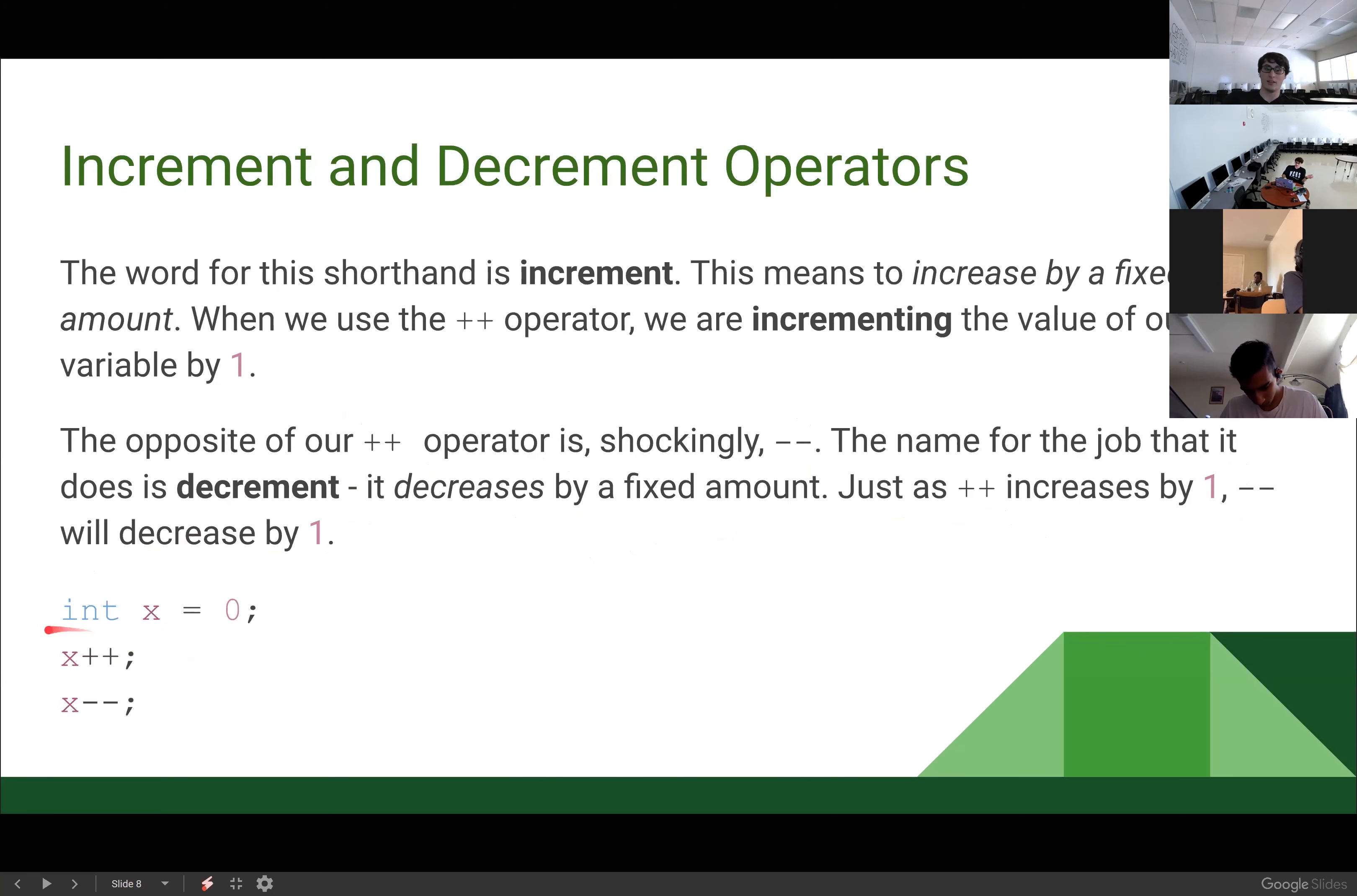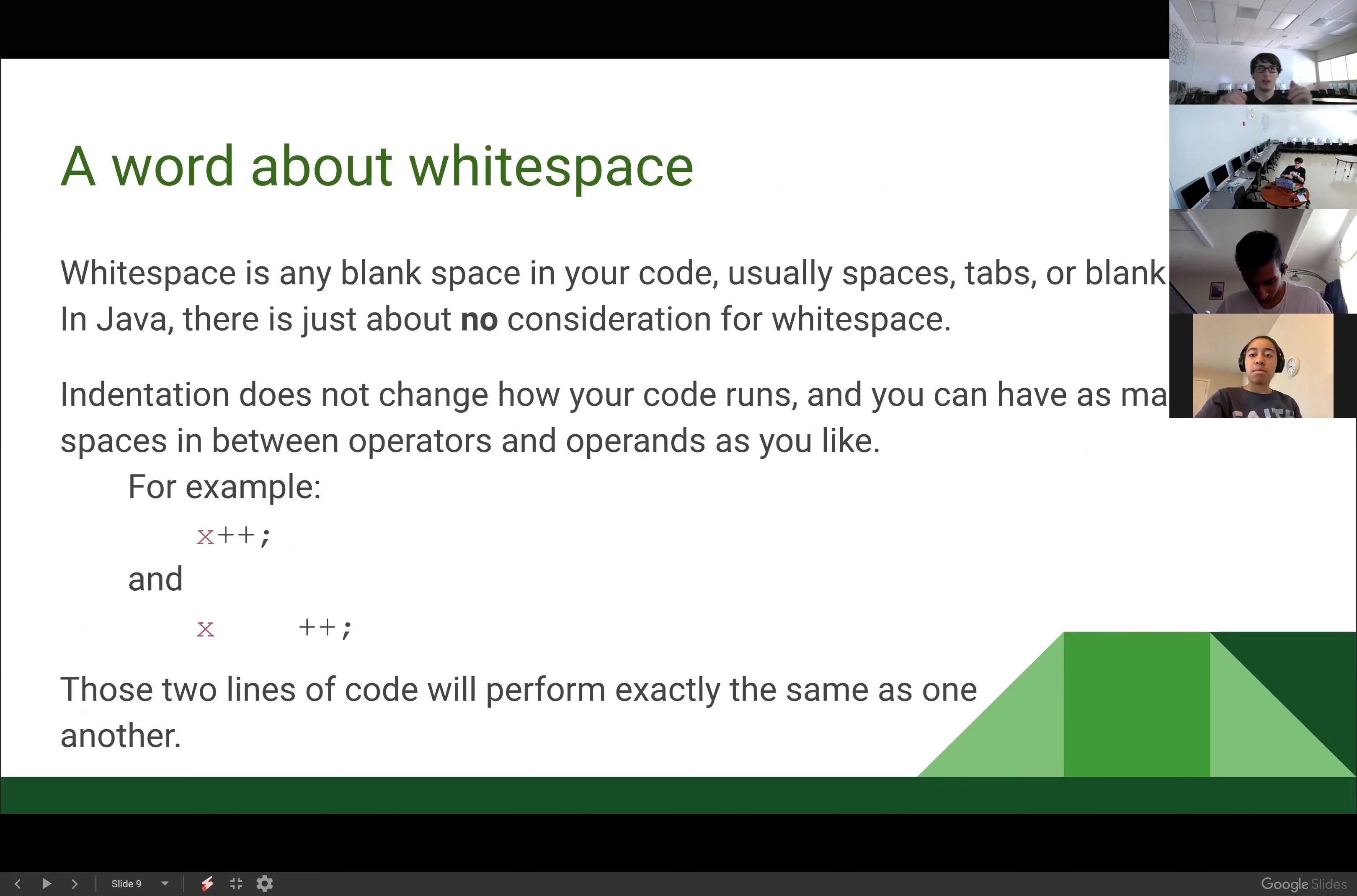So if I declare my integer x as equaling zero, and then I increment it, x is going to equal one. And then if I decrement it, x is going to equal zero again. So these are super helpful shorthand for if I want to add or subtract one from a value. Now, it is possible to add or subtract more than one. And I'll talk about that in just a little bit. But first, let's talk about white space in Java.